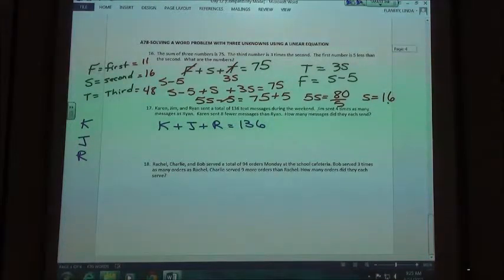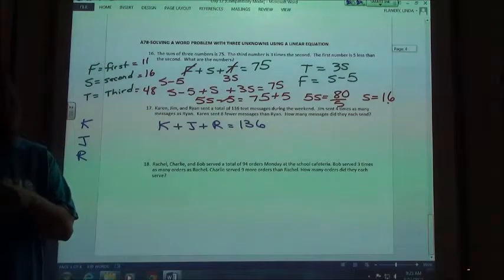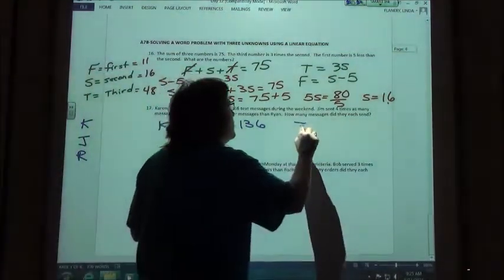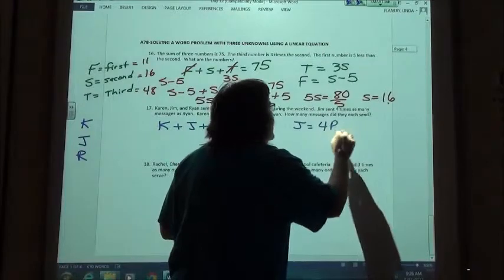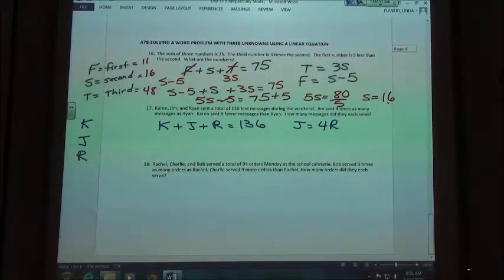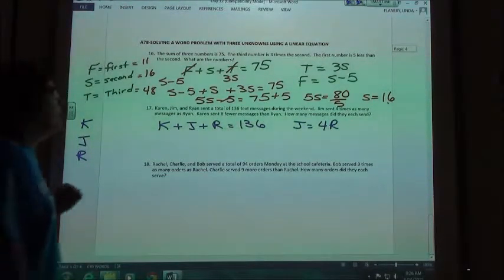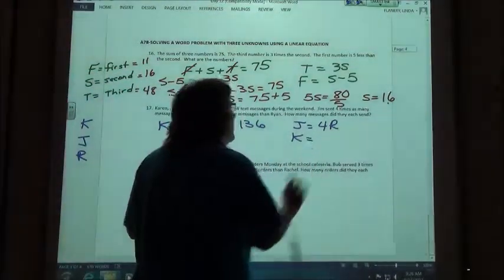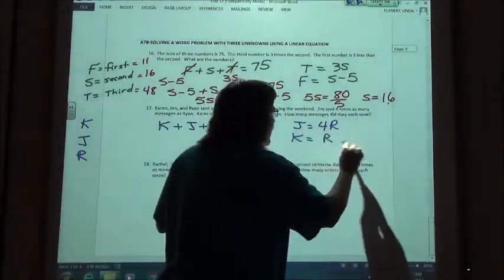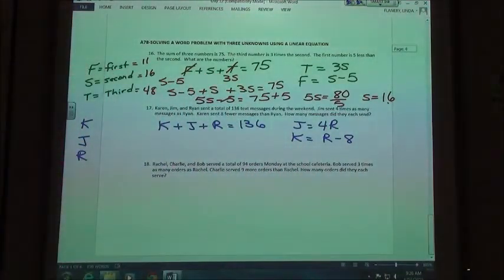My second sentence, Jim sent four times as many messages as Ryan. How do I write that equation? J equals 4R, right? Jim sent, so J is going to equal four times as many as Ryan, so J equals 4R, exactly. Karen sent eight fewer messages than Ryan, so that equation would be? J equals R minus 8. Exactly. Eight fewer than Ryan would be R minus 8, so K equals R minus 8.